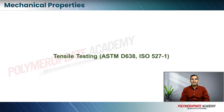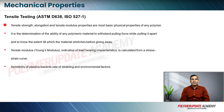The ASTM standard for tensile strength is ASTM D638 and the corresponding ISO standard is ISO 527-1. Tensile strength, elongation, and tensile modulus properties are some of the basic physical properties of any polymer.